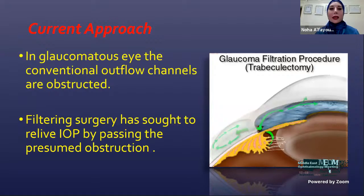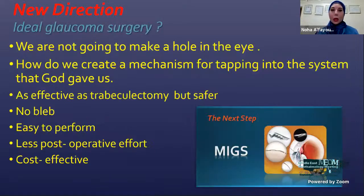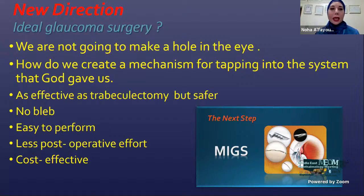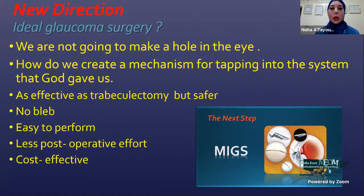In a glaucomatous eye, the conventional outflow canals are obstructed, and filtering surgery seeks to relieve IOP by passing the presumed obstruction. We always research the ideal glaucoma surgery — one that does not make a hole in the eye like trabeculectomy, and creates a mechanism for tapping into the system God gives us. It should be as effective as trabeculectomy, but safer, no clip, easy to perform, less postoperative effort, and inexpensive.